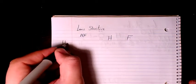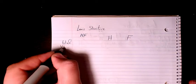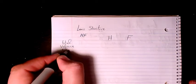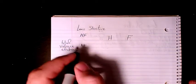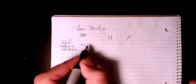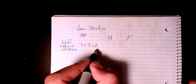So HF. I need to find out the total number of valence electrons. H is one and F belongs to a halogen group so it's going to be seven. So it's going to be one plus seven, eight in total.